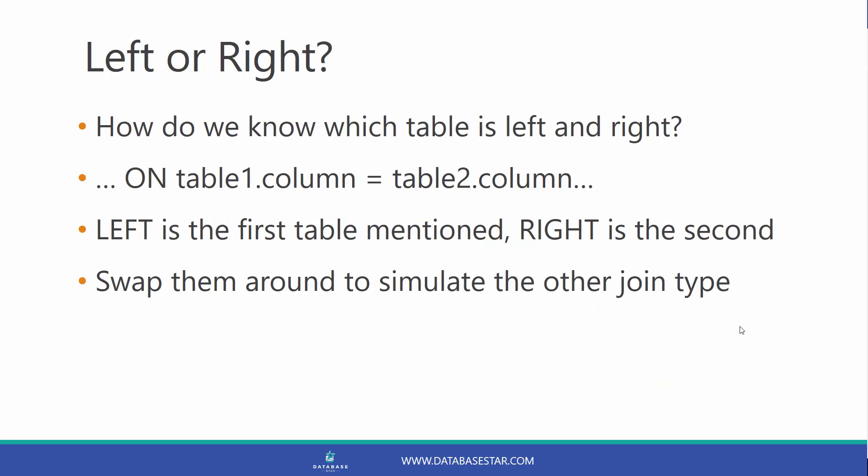How do we know which table is the left table and which one is the right? It's the join on condition: on table1.column equals table2.column. Left is the first table mentioned, and right is the second table mentioned. You can swap them around and get the right join effect using a left keyword if you like.